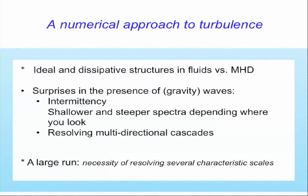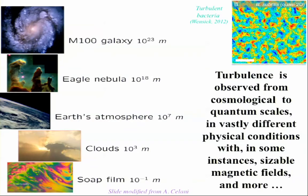So, I'm going to talk about ideal dissipative structures. I will talk about some surprises from classical homogeneous isotropic turbulence. Well, when you put waves, and in particular gravity waves, now this is not self-gravitation. We have a big mass here. There are some surprises. The flow behaves differently. And then I will use those surprises to try to justify a big run.